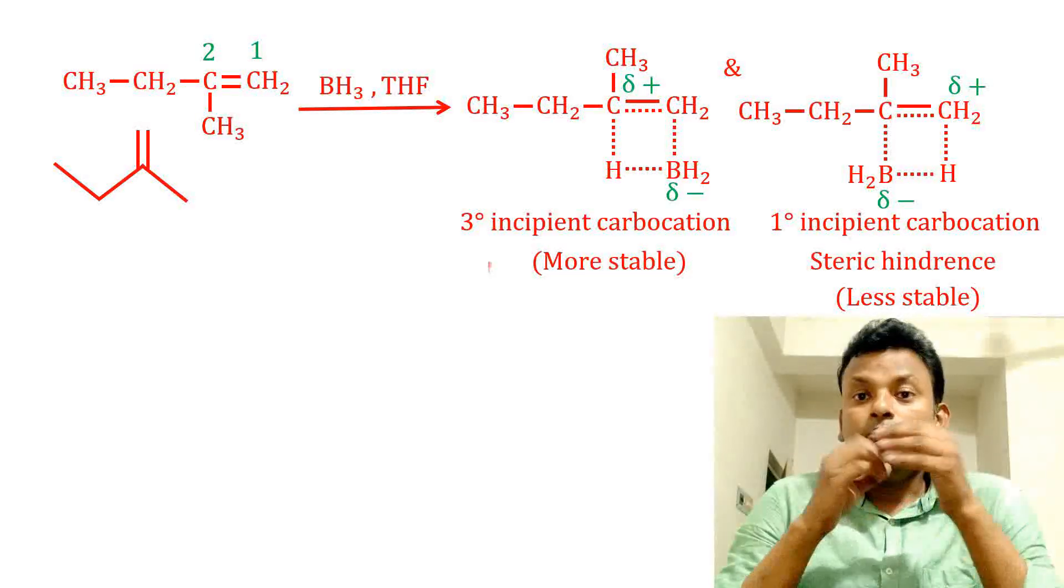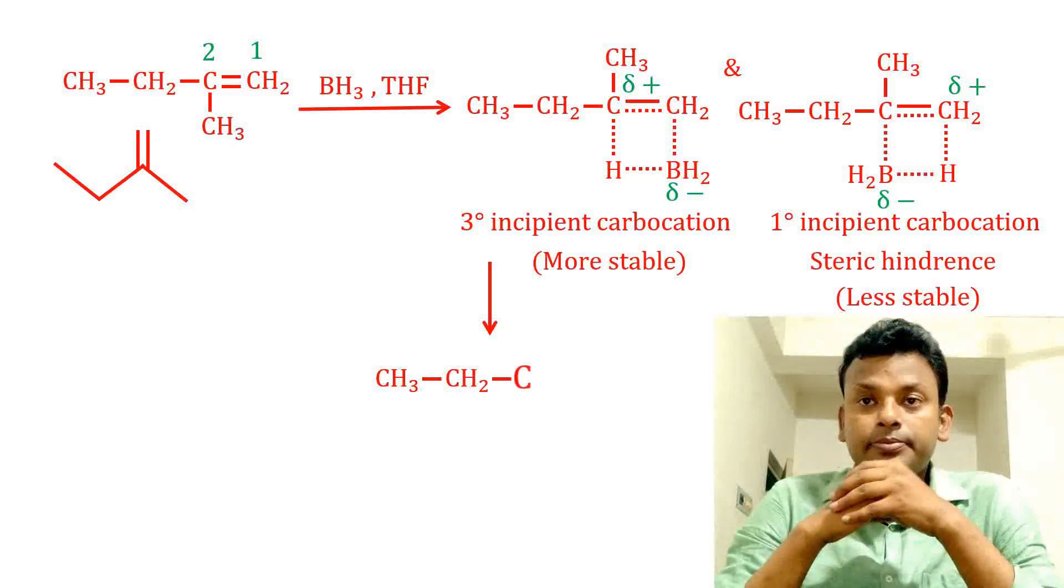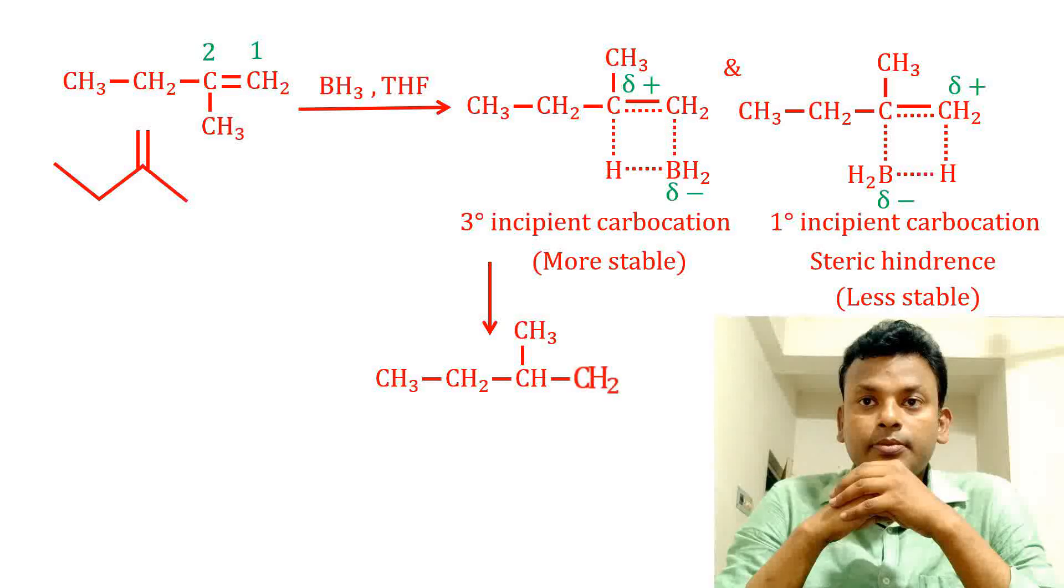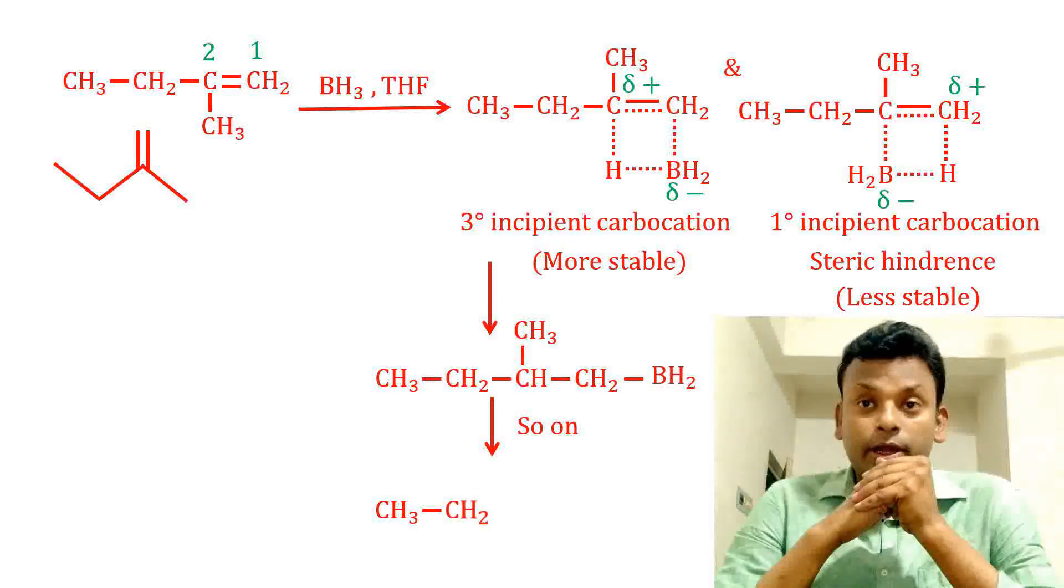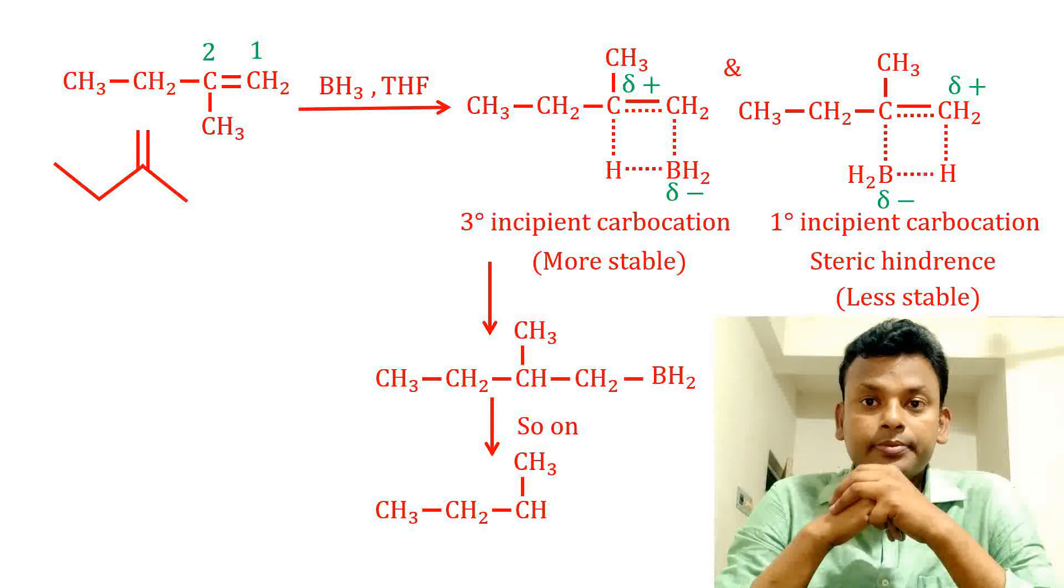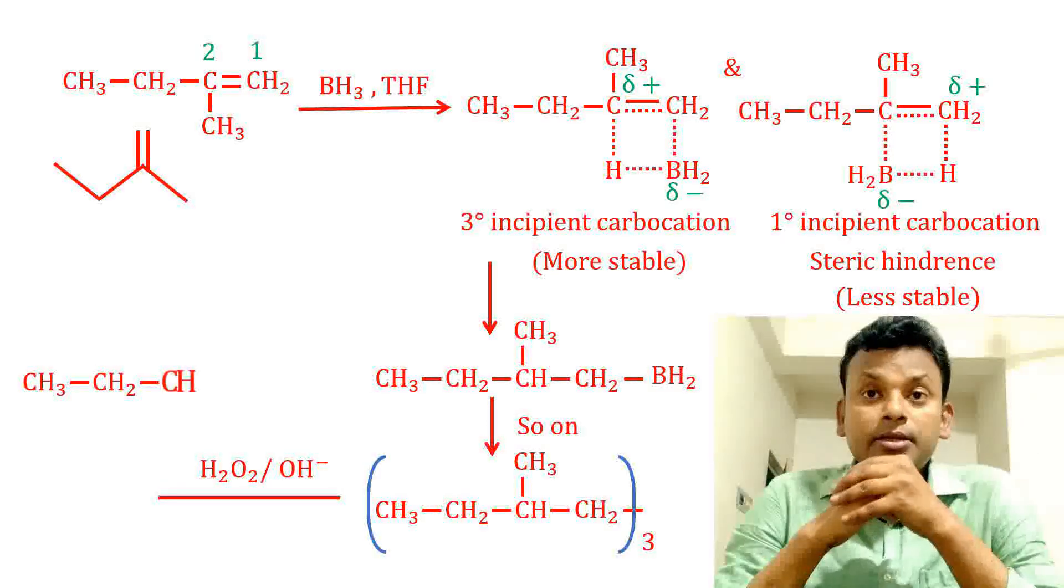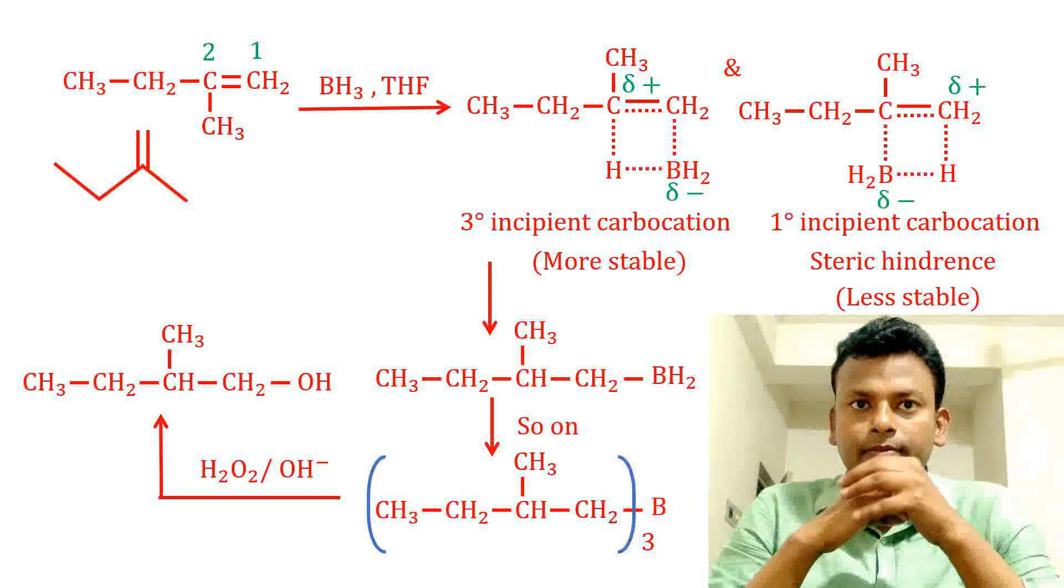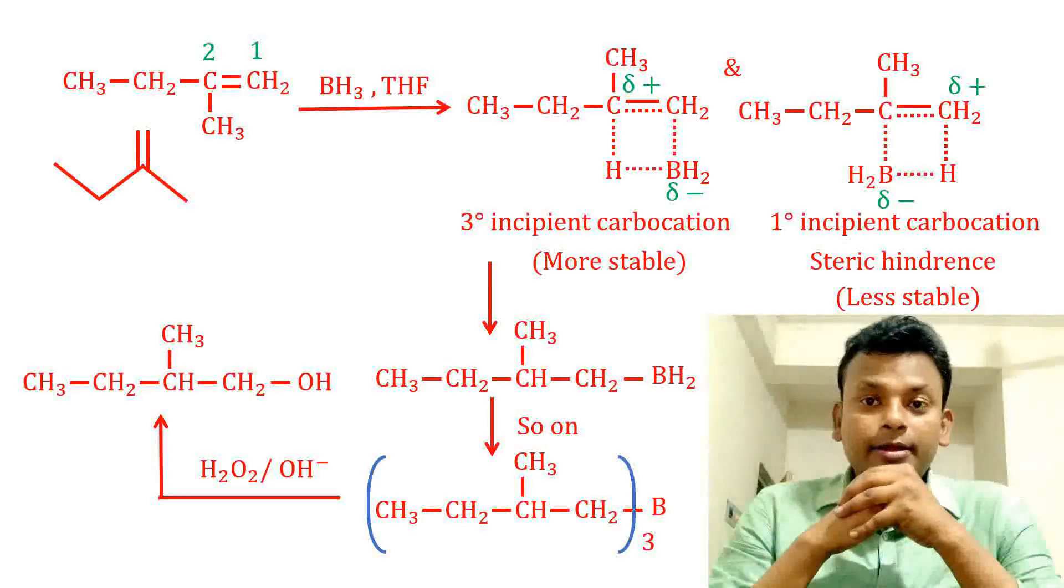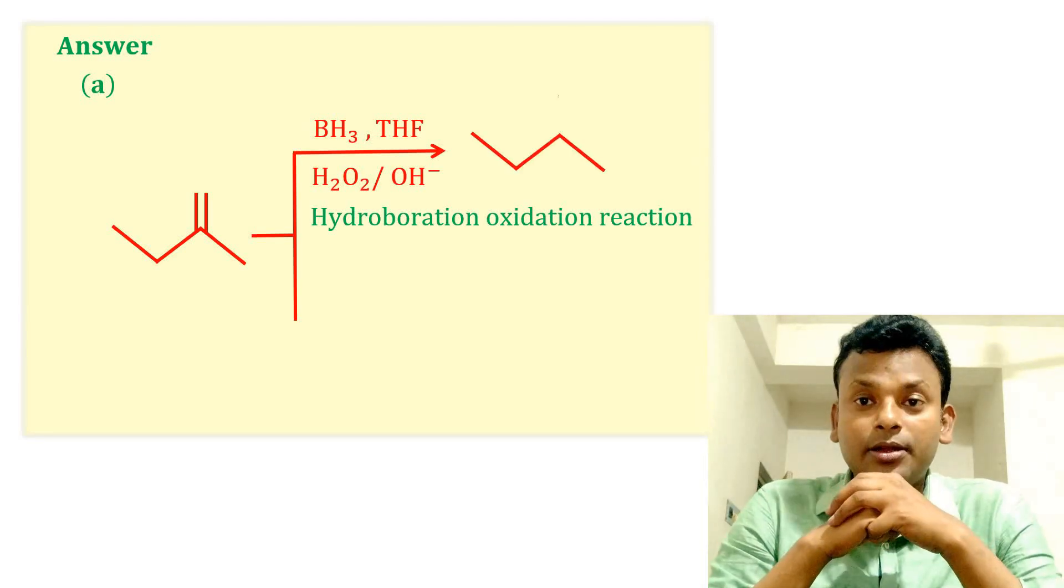So we know that the more stable transition state gives the major product. So it gives this product. And again, it reacts with H2O2 and gives trialkylborate, and hydrolysis gives this terminal alcohol. This is the hydroboration-oxidation reaction. And now back to the answer: this is the final product A from terminal alcohol by the hydroboration of alkene.